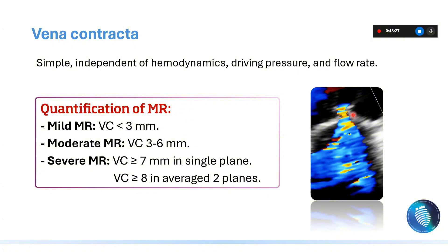If the vena contracta is less than 3 mm, the patient has mild mitral regurgitation. If the vena contracta is between 3 to 6 mm, this means the patient has moderate mitral regurgitation. If the vena contracta equals or exceeds 7 mm in a single plane — for example in the apical 4-chamber view — this means severe mitral regurgitation. If measuring in both apical 4 and apical 2-chamber views, take the average, and the cutoff for severe mitral regurgitation becomes 8 mm or more.